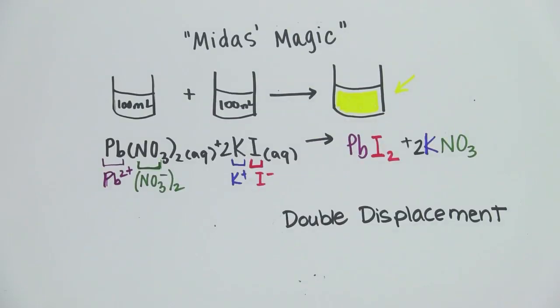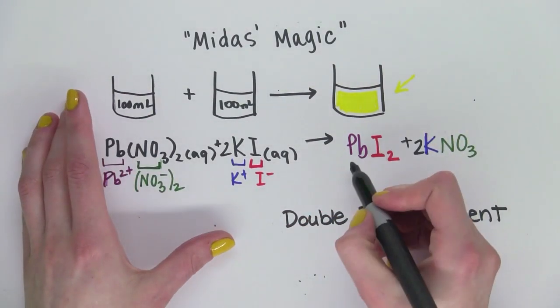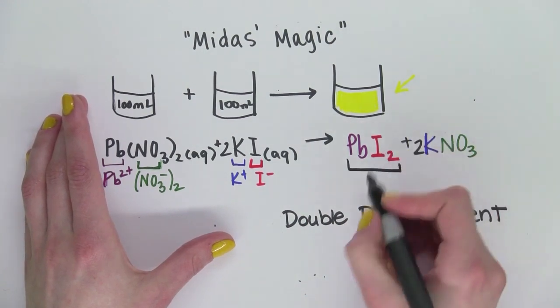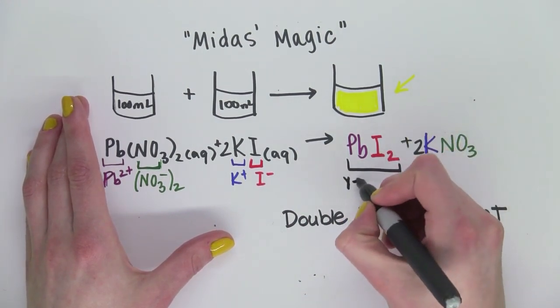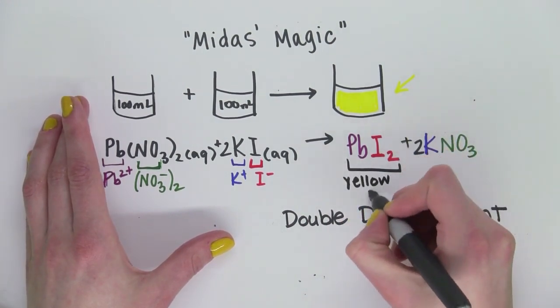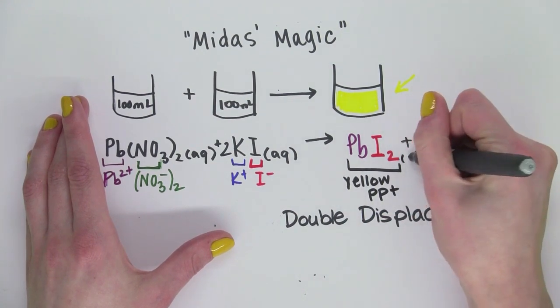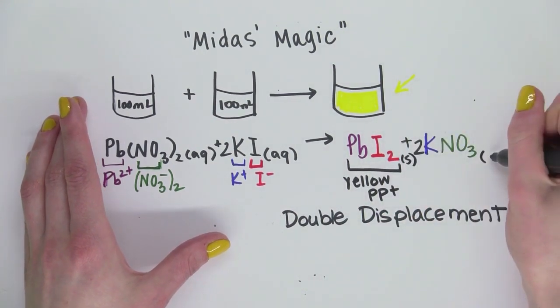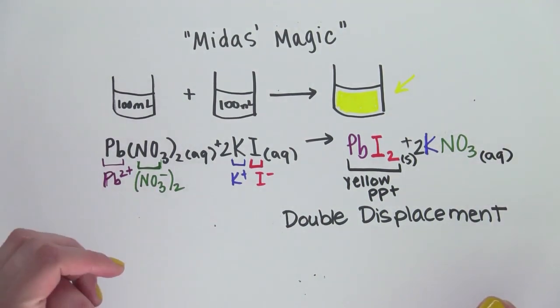So going back to our equation here, the lead iodide, this is the yellow precipitate. It's a solid. And the potassium nitrate is aqueous.